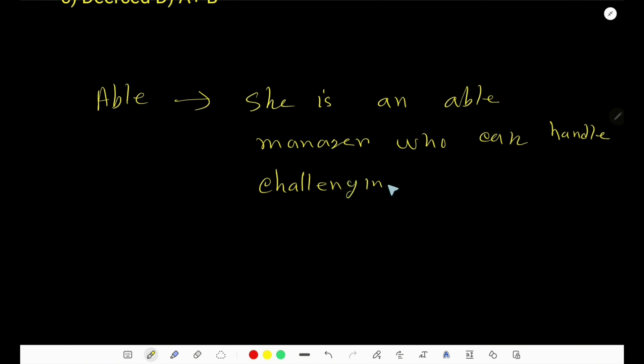Let me take the adjective form of able again. This is adjective, able. Let me write a sentence.